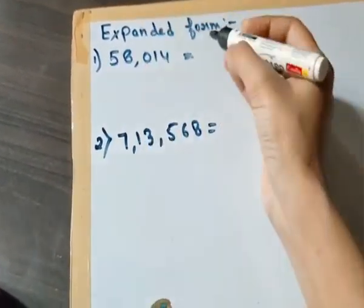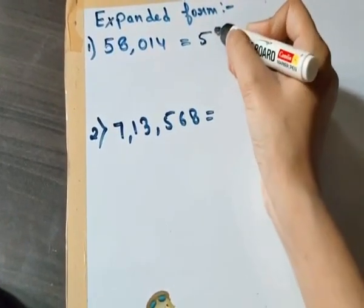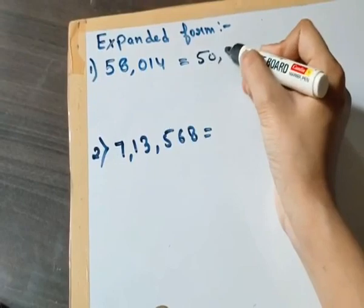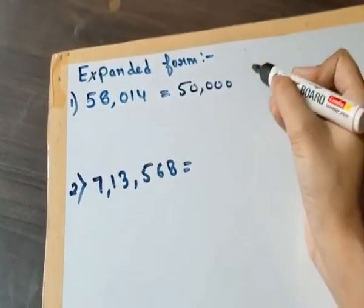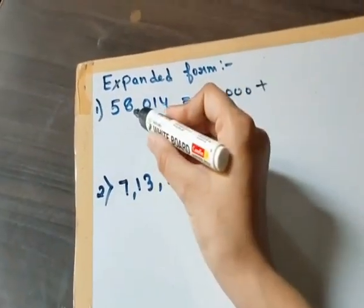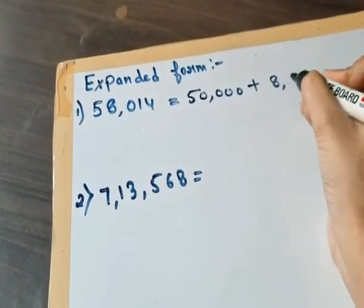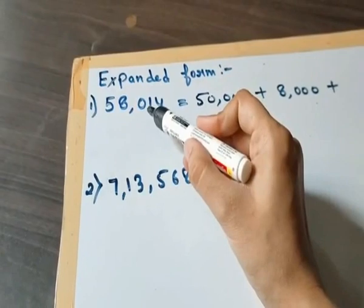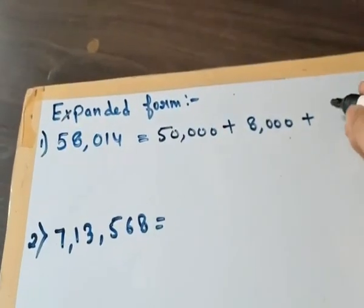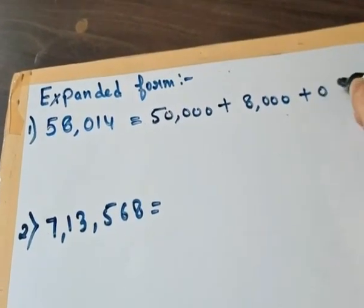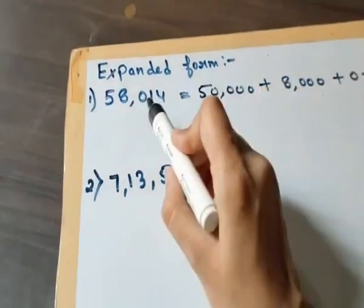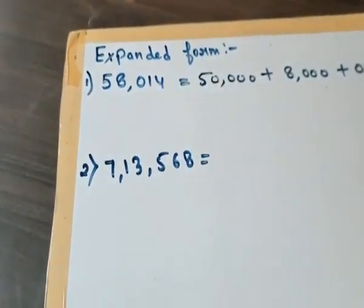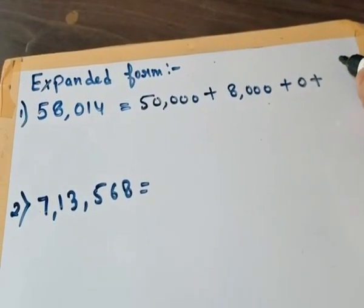First we will write 5 that is at the ten thousand place, so it will be 50,000 plus 8 is at the thousand place, so we will write 8,000. Now at the hundred place there is zero, so we will write here zero plus.